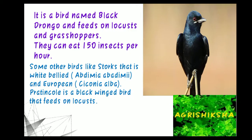Many birds feed on insects, locusts, and grasshoppers and help reduce their population. The black drongo is a bird that feeds on locusts and grasshoppers and can eat up to 150 insects per hour. Other birds that feed on locusts include storks such as the white-bellied stork, the European stork Ciconia alba, and the black-winged kite.